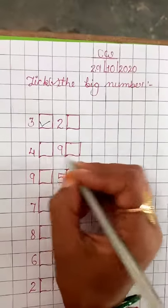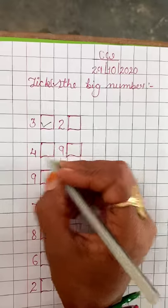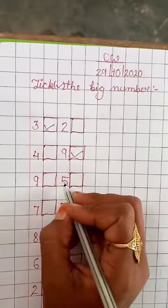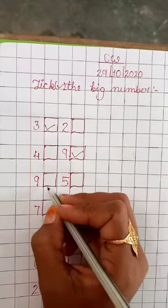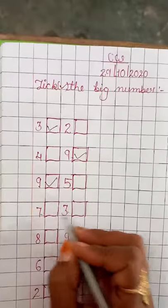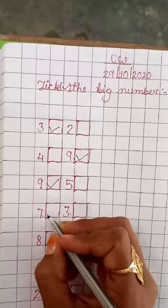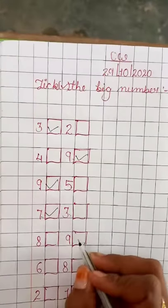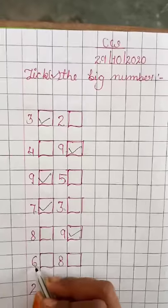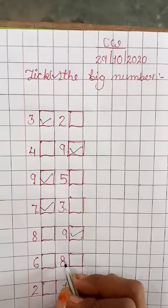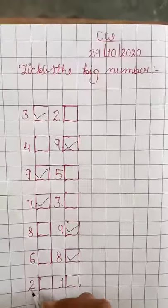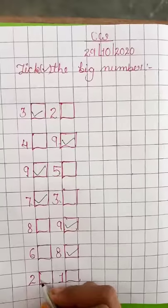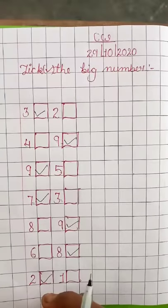Nine and five, which is big? Seven and three, seven. Seven, nine, nine, six, eight, eight, two, two.